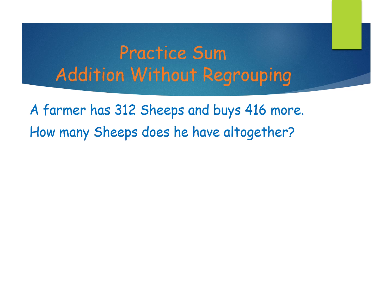Next, practice sum — addition without regrouping. Here is the story sum: a farmer has 312 sheep and he buys 416 more. Then how many sheep does he have altogether? Here are two new keywords: 'altogether' and 'more' — these are both keywords of addition.